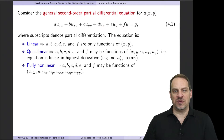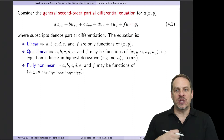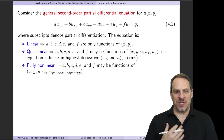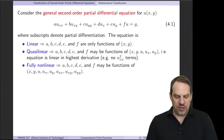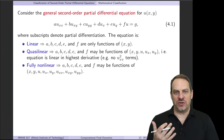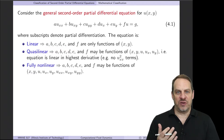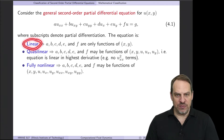Then we have the zeroth derivative term f times u, as well as the right-hand side function g. Such an equation will be linear or nonlinear depending on the nature of the a, b, c, d, e, f coefficients. In particular, if the coefficients a, b, c, d, e, and f are only functions of the independent variables x and y and not the dependent variable u, then the equation is linear.